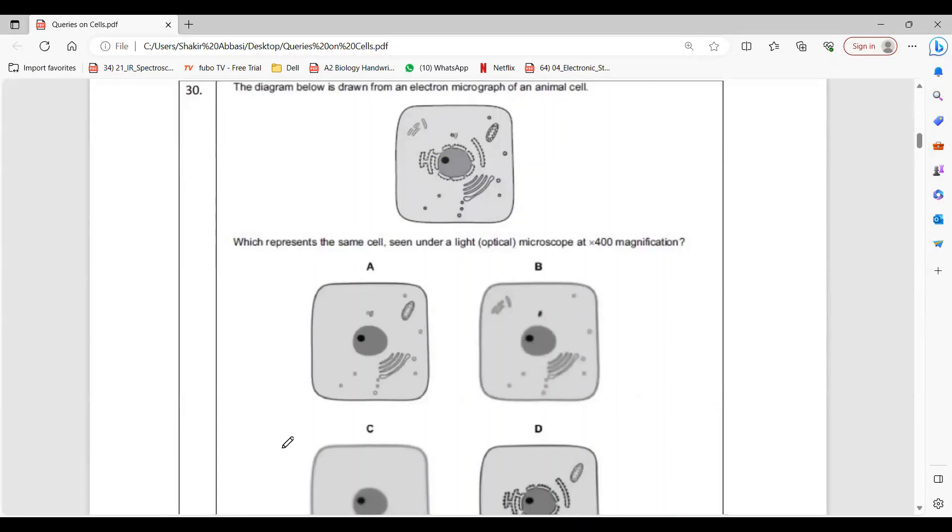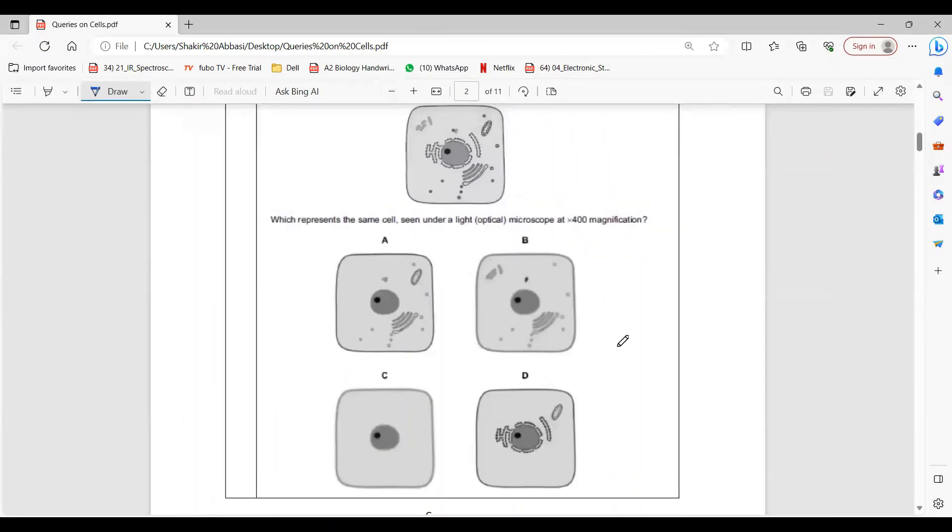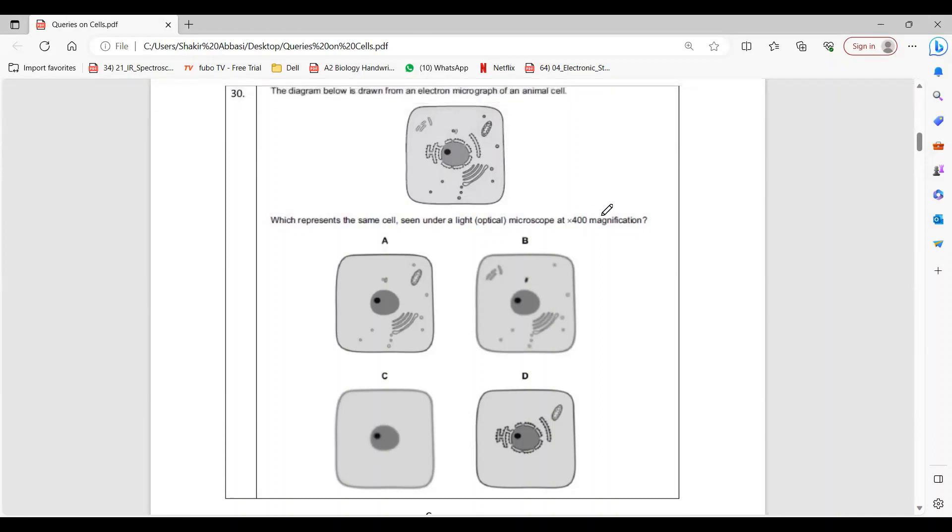You know light microscope doesn't have much resolution, so it won't be able to make us see things clearly. And also when it magnifies and zooms in the objects, these objects are not seen. So mitochondria is seen just blurred, but that also at very high magnification. When light microscope zooms in something, the resolution is quite limited so the structures disappear.